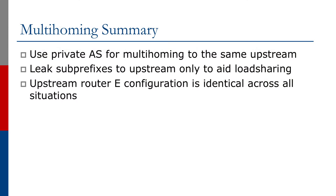To summarize: if we're multi-homing to the same upstream provider, we're going to use a private AS. There really is no need for a public AS number, and regional registry policy may not allow delegation of an AS number for this purpose. We're going to leak sub-prefixes to the upstream provider only to aid our load sharing. It's really important as a customer that we announce our address block to the upstream provider. And as we've noticed, the upstream provider's border configuration to the rest of the internet is identical across all these situations — we're announcing only aggregates to the global internet and making sure that the private AS numbers used for customer multi-homing are not leaked to the internet either.